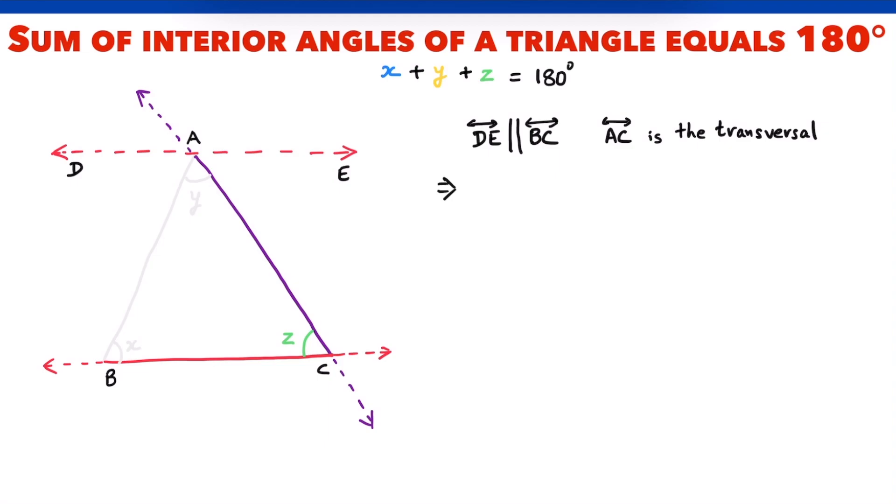This means angle EAC has to be equal to angle BCA. Why? Because these are alternate interior angles.